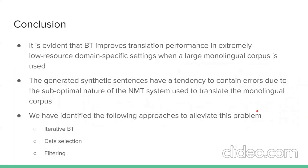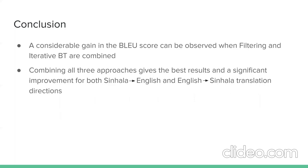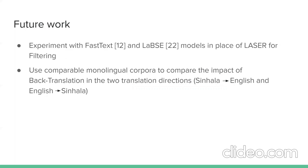It is evident that back-translation improves translation performance in extremely low-resource domain-specific settings when a large monolingual corpus is used. Generated synthetic sentences tend to contain errors due to the suboptimal NMT system used. We identified iterative back-translation, data selection, and filtering to alleviate this problem. A considerable gain in BLEU score is observed when filtering and iterative back-translation are combined. Combining all three approaches gives the best result and significant improvements for both Sinhala-to-English and English-to-Sinhala directions. Future work will experiment with FastText and LaBSE models in place of LASER for filtering, and use comparable monolingual corpora to compare the impact of back-translation across the two translation directions.